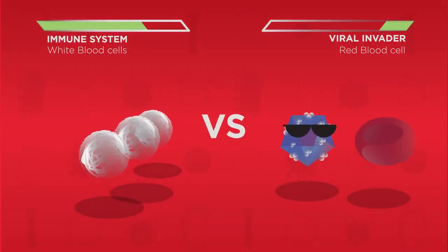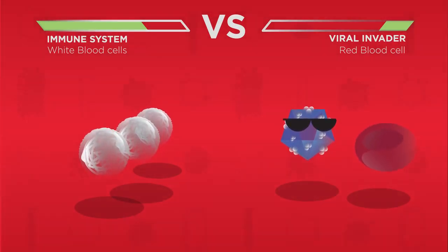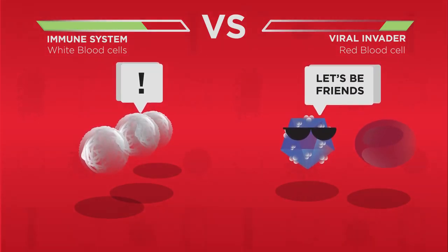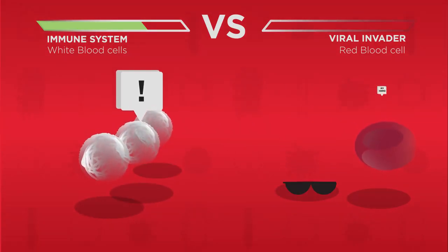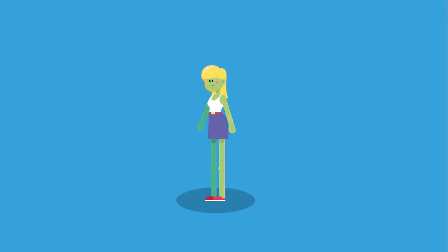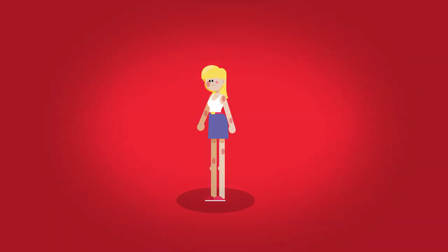Fortunately, the human immune system is very good at dealing with viral invaders. Sometimes our immune system will recognize the virus as an intruder and destroy it before it gains entry into a cell. Even after infection begins, our immune system can destroy the virus and the person recovers. Sometimes, however, the immune system cannot destroy the virus fast enough and the virus can cause permanent damage or death.